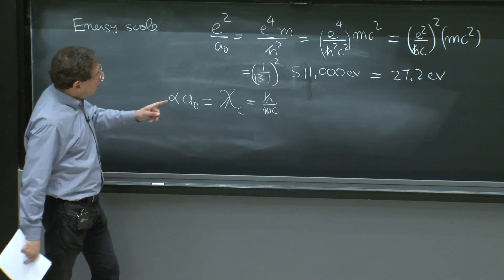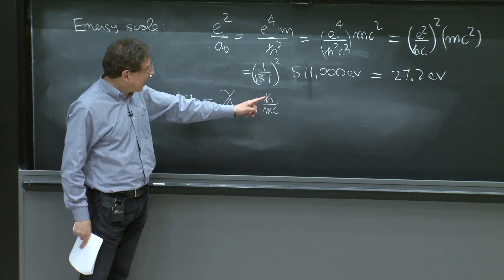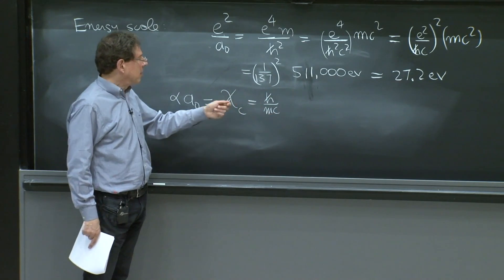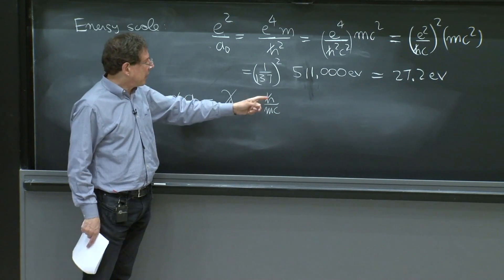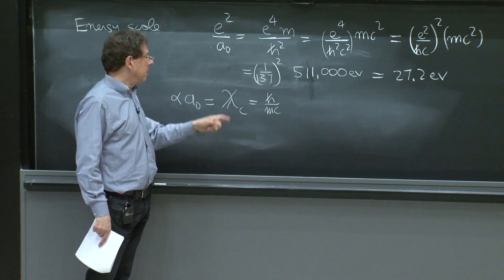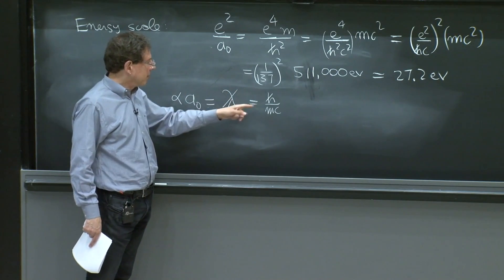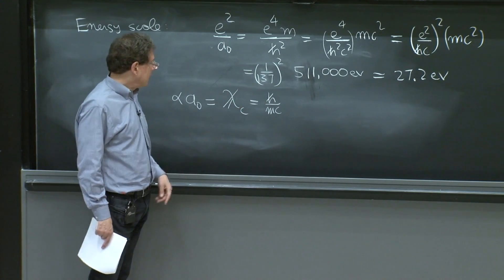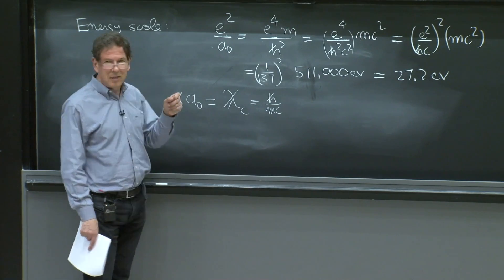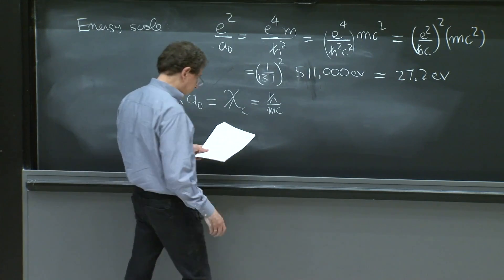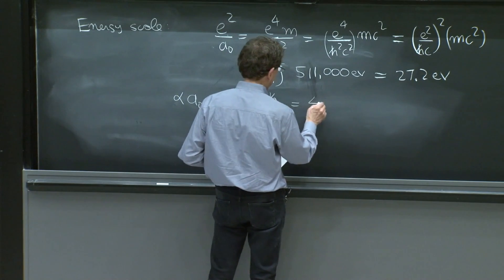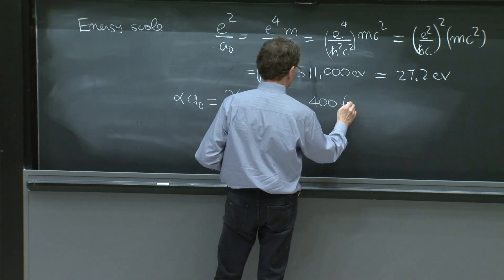Remember that the de Broglie wavelength is h over the momentum. The Compton wavelength is h over mc. And the barred Compton wavelength is h bar over mc. And that's what alpha times a0 is. And that quantity is about 400 Fermi.